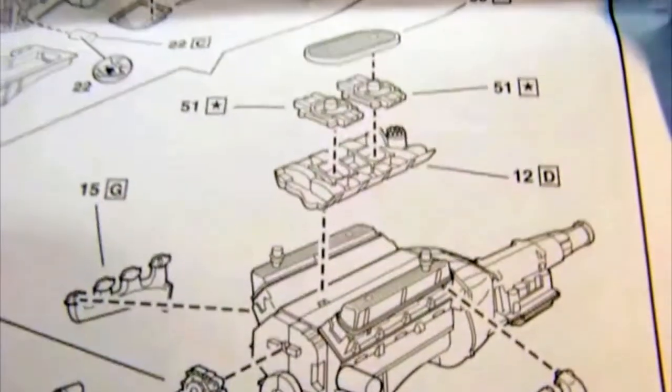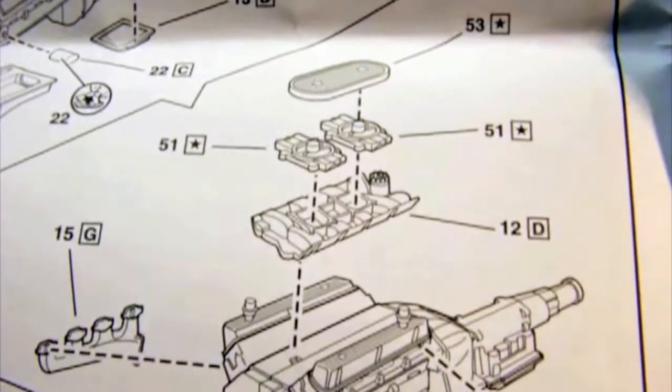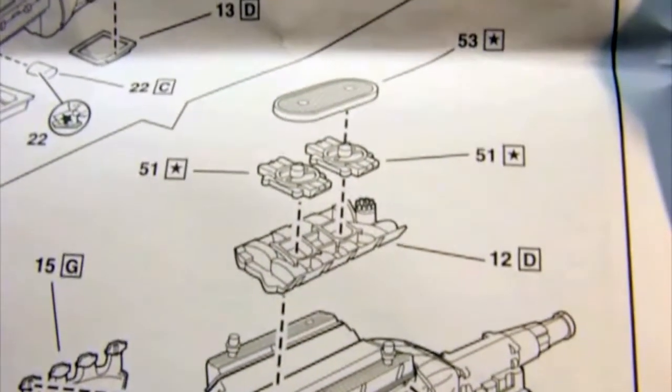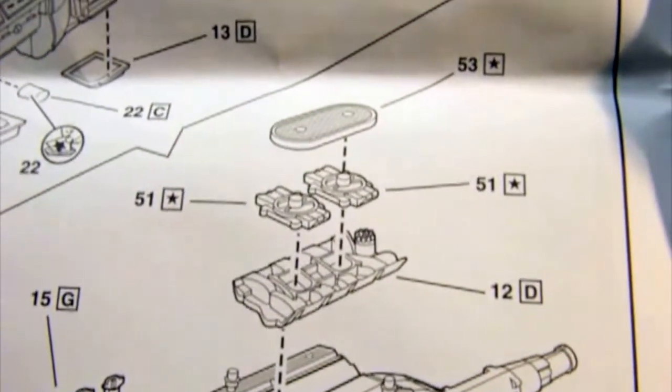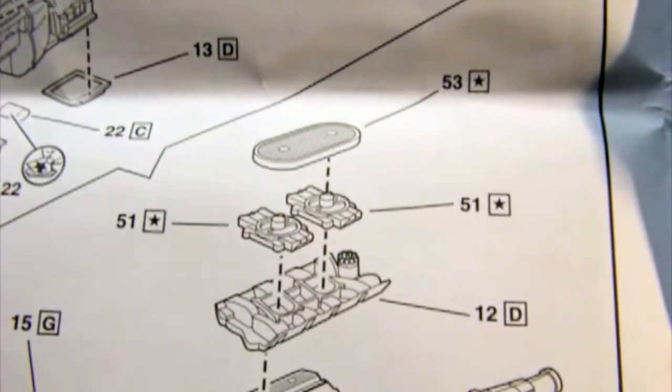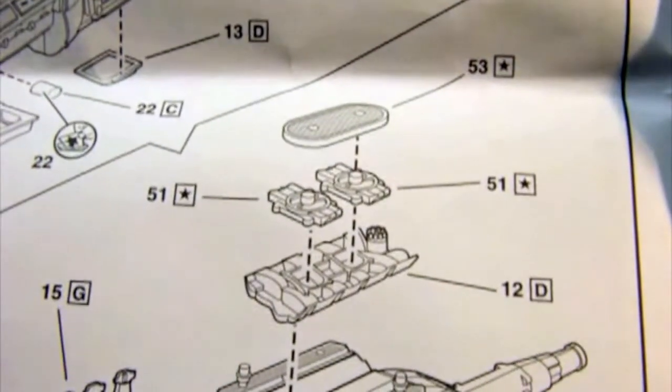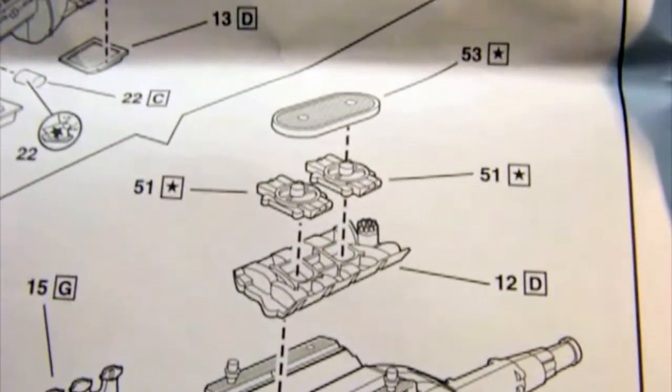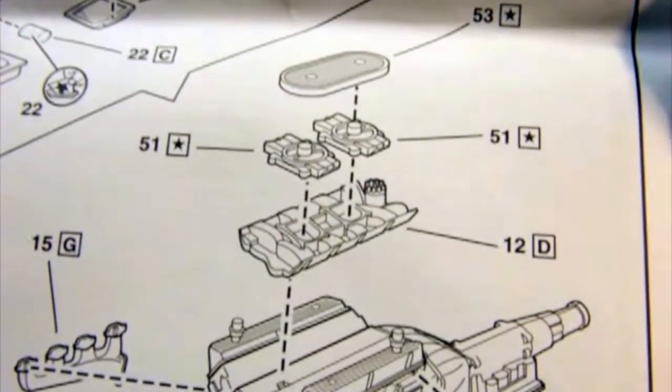And that is right here in the first step. As you're working on the engine, the instructions tell you to put the intake manifold in backwards. And this is not correct. It should be with the distributor toward the front of the engine, like pretty much all Ford motors ever.